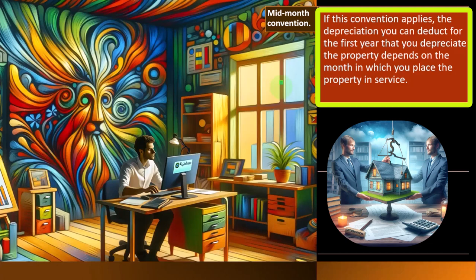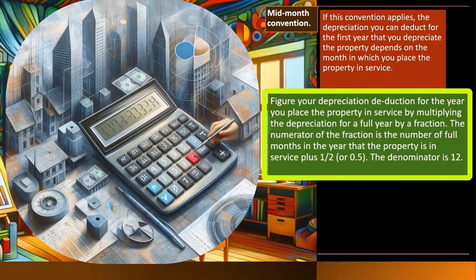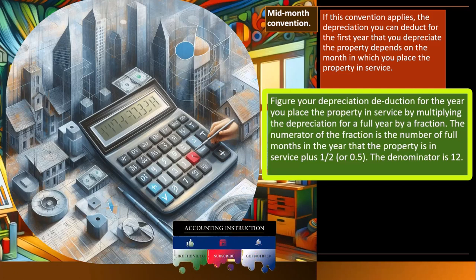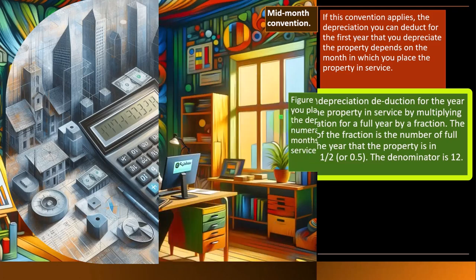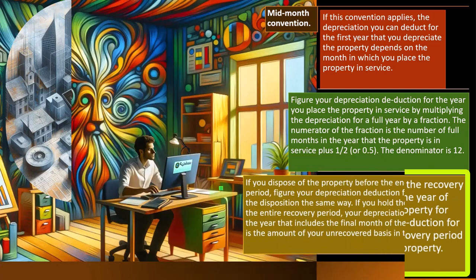Mid-month convention: if this convention applies, the depreciation you can deduct for the first year depends on the month you place the property in service — often used with real estate. Figure your depreciation for the year you place the property in service by multiplying the depreciation for a full year by a fraction: the numerator is the number of full months in service plus 0.5 (mid-month), the denominator is 12. If you dispose of the property before the end of the recovery period, figure your depreciation deduction for the year of disposition the same way. If you hold the property for the entire recovery period, your deduction for the year including the final month is the amount of your unrecovered basis in the property.